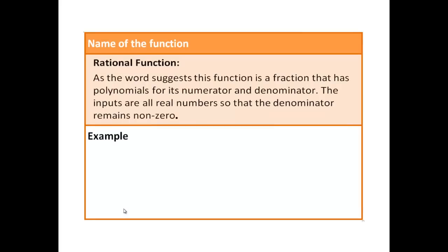Rational function, as the word suggests, it's going to be a quotient. You're going to have a numerator and denominator. So a rational function is a function where the numerator is a polynomial, denominator is a polynomial. And the input will be all values of x that make denominator non-zero.